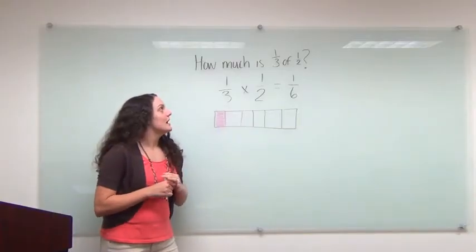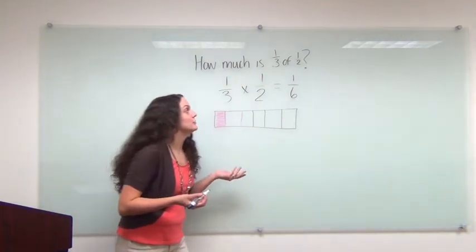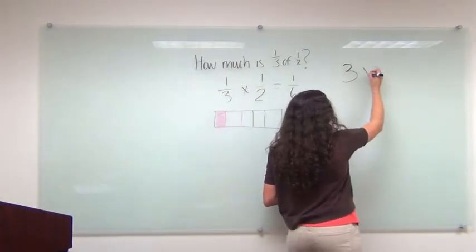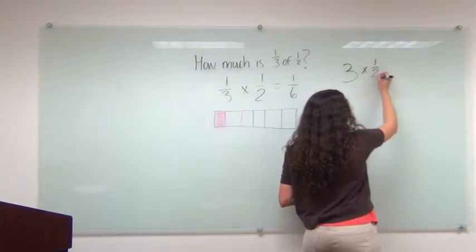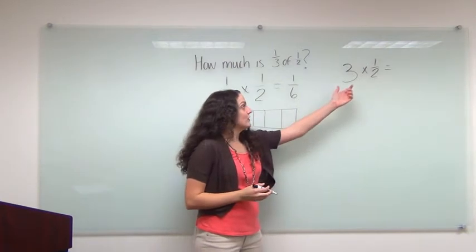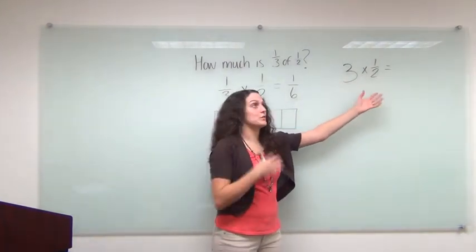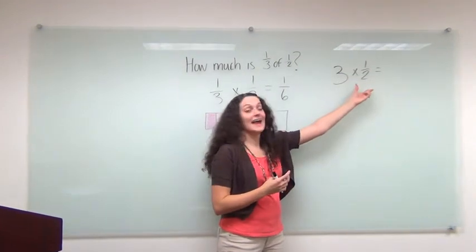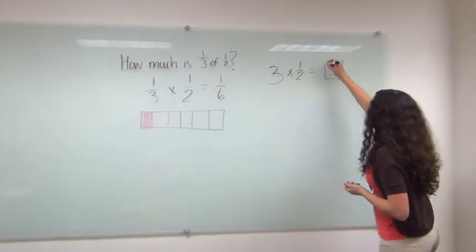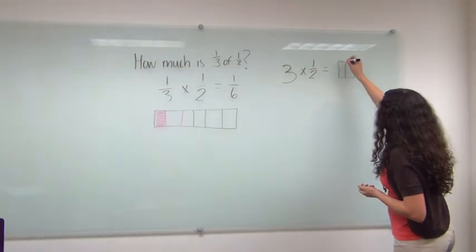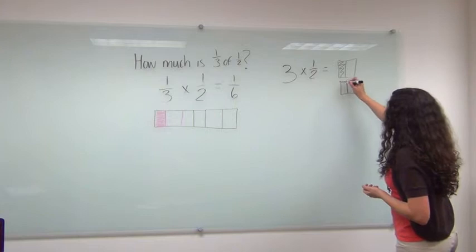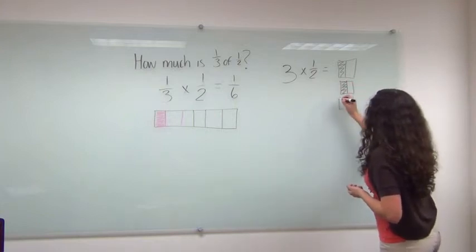Let's think about it with a whole number multiplied by a half. So if I say three times one-half, I can think of it as three copies or three groups, three copies of this half. So that would look like this. Here's one-half.